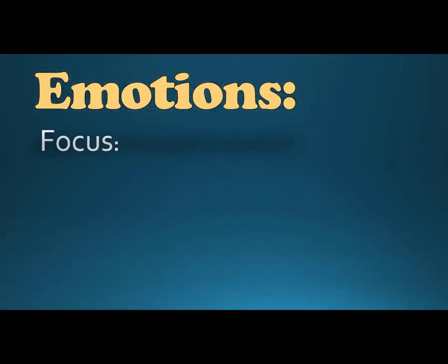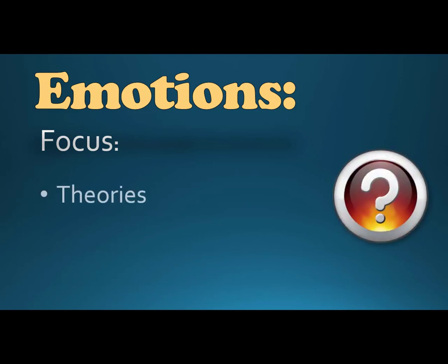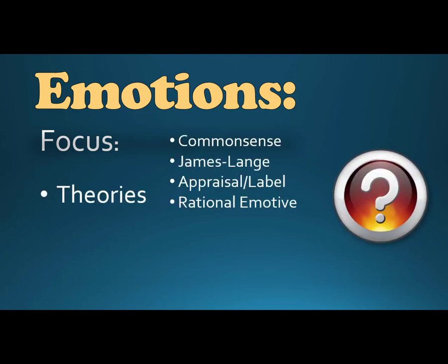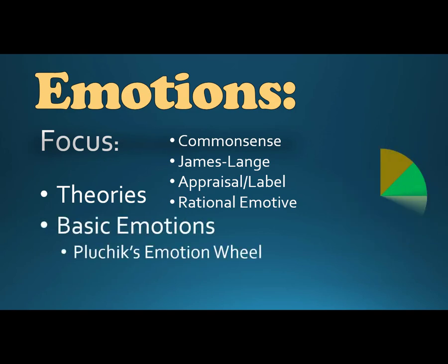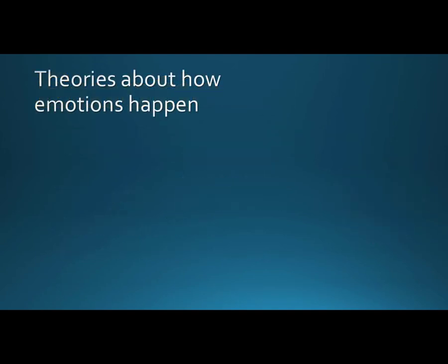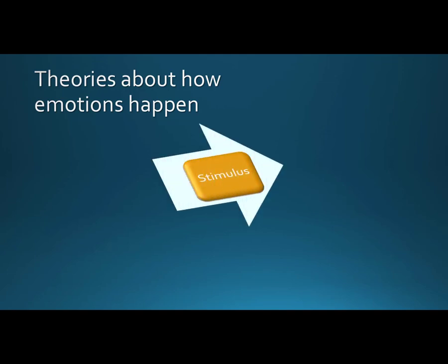That's what this video will focus on—theories such as the common sense, James-Lange, appraisal label, and rational emotive, and the basic emotions, with a nod to Robert Plutchik's Emotions Wheel. There are a number of theories about how emotions occur, most just moving around the order that things happen. All of them, however, start with a stimulus, or what some call an activating event.